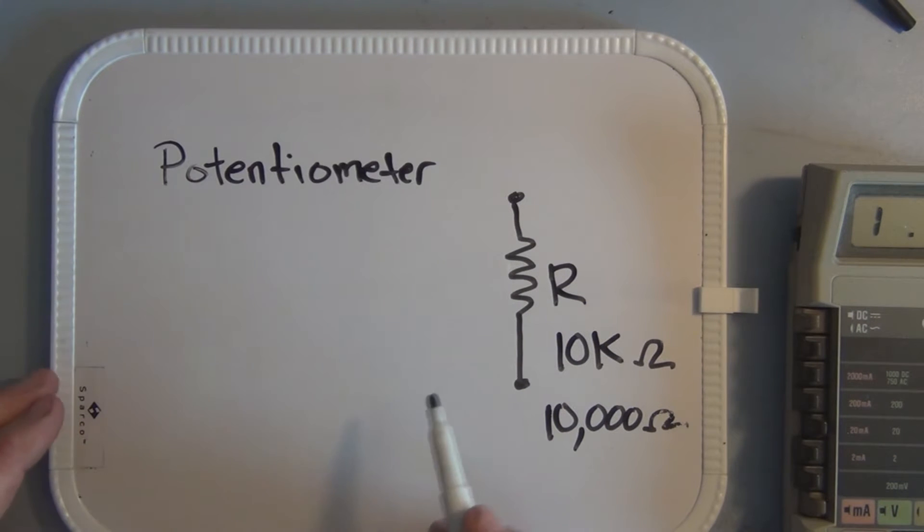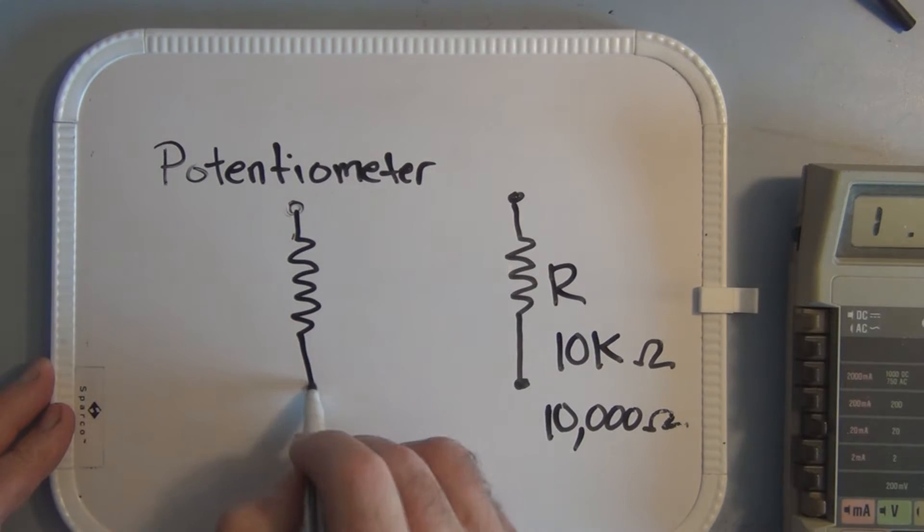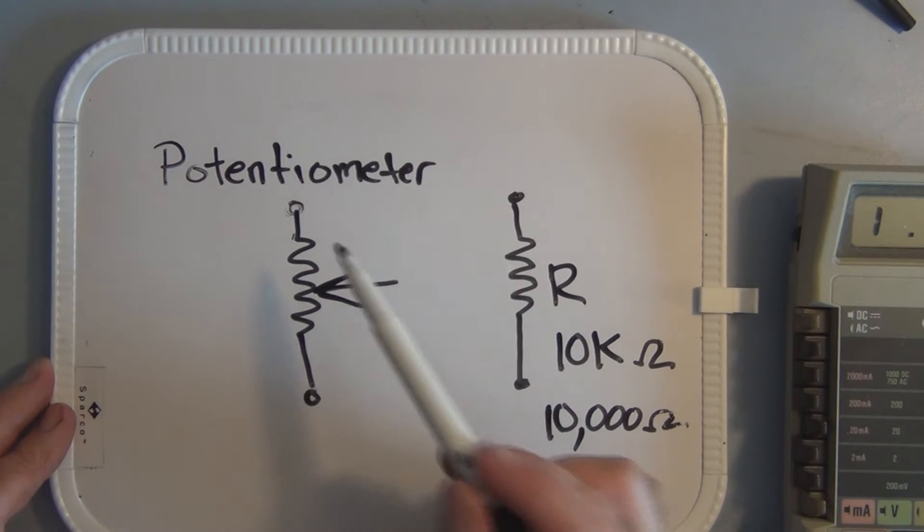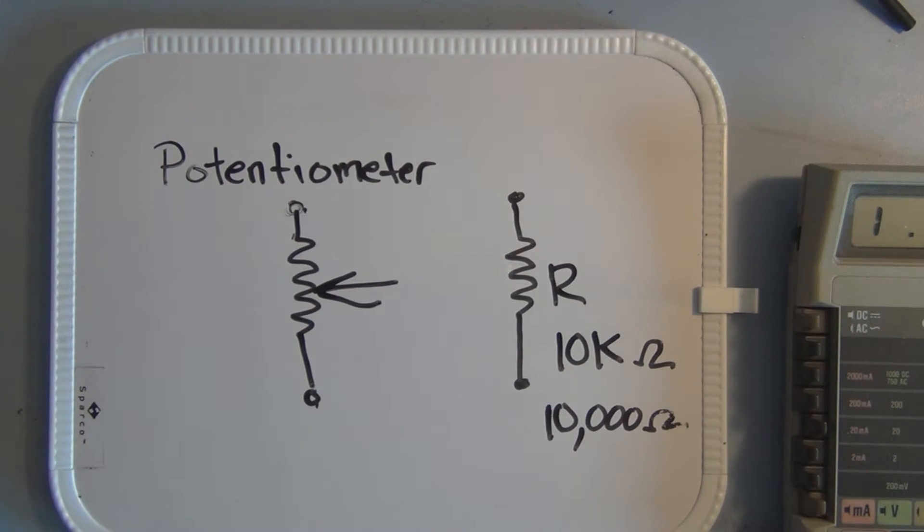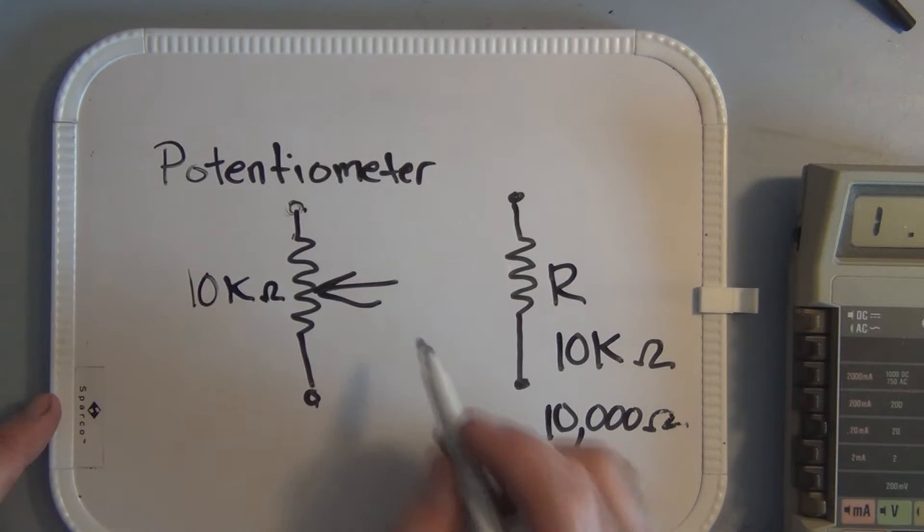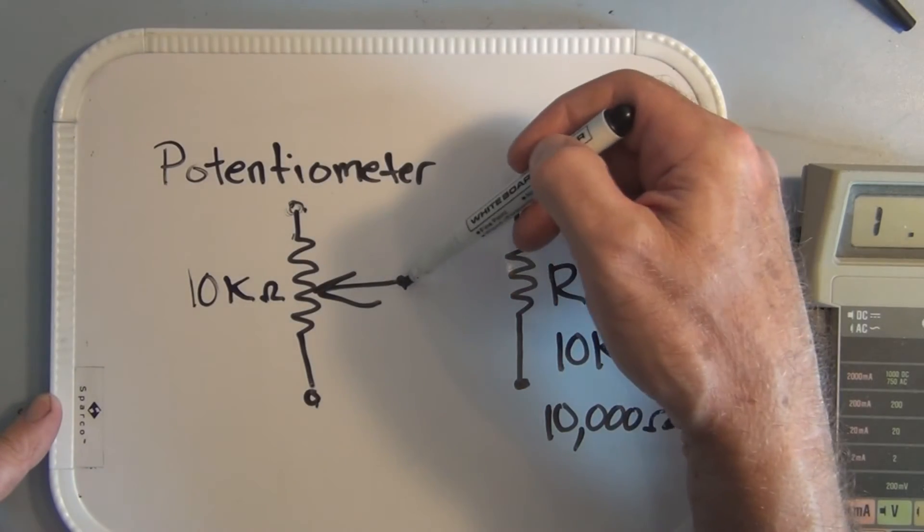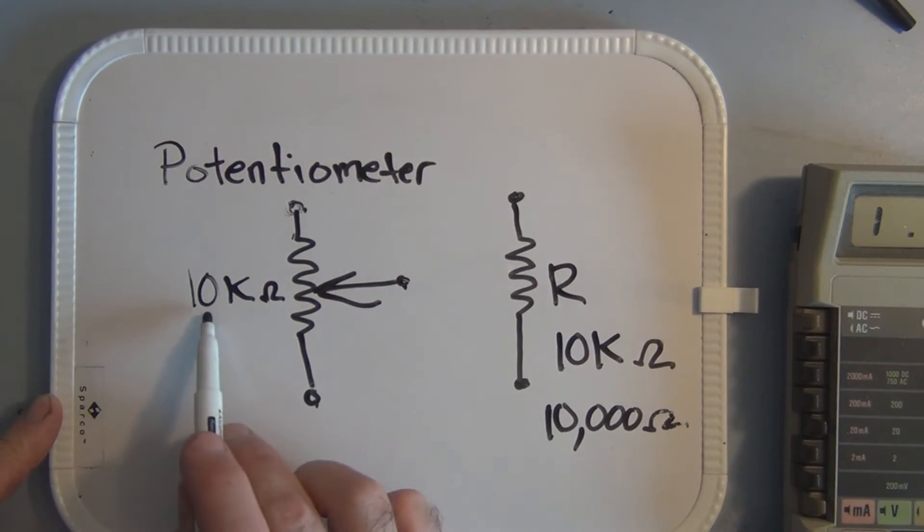Now the symbol for potentiometer is similar to a resistor. It's the same symbol except there's an additional contact. You will have access to the full 10k ohms in this particular example but if you measure from a different reference point either from this side to the third contact or from this side to the third contact, you will have a percentage of the total 10k resistance you have available.